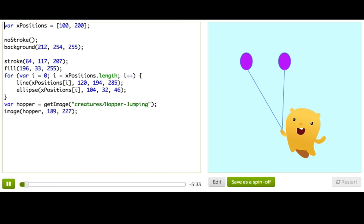So here we have this program that displays Hopper holding some balloons. Super cute. And so how it works is that we have this xPositions array that has two numbers in it that say where we want the balloons at. And then down here we have this loop. And this loop goes through every element in that array. And for each of them, it draws a line from the x down to Hopper's hand and then draws an ellipse at the x that's 30 by 40 pixels and that's our balloon.